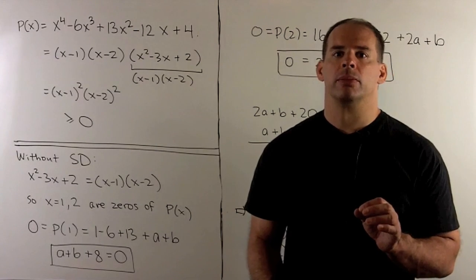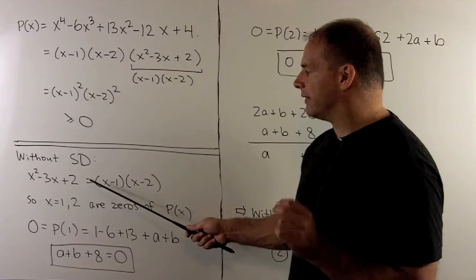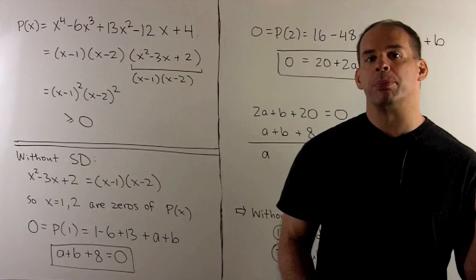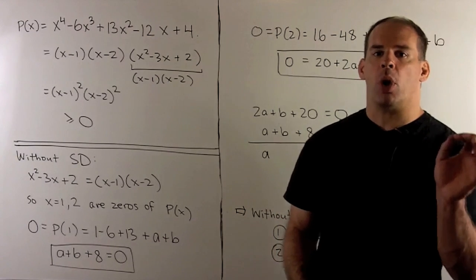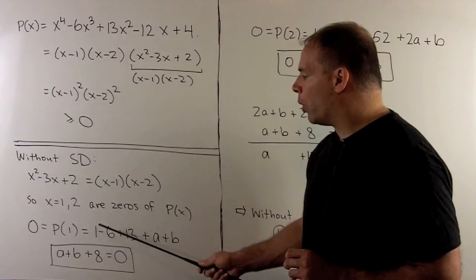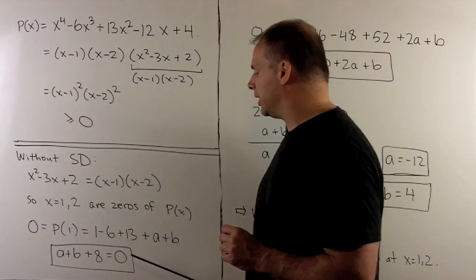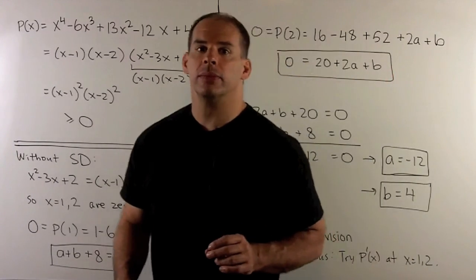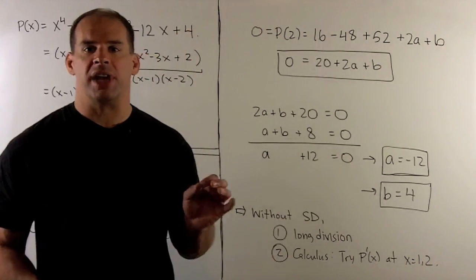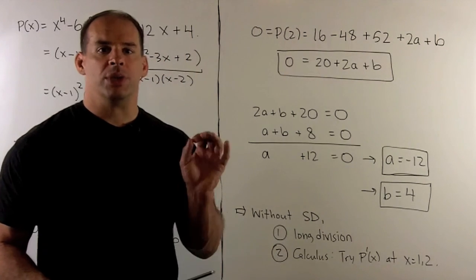Now for a third approach, if we didn't have synthetic division, well, we know how to factor our quadratic that divides P of X. So we'll have that 1 and 2 are zeros of this quadratic, which in turn means they're zeros of P of X. Now if we put 1 or 2 into P of X, we expect to get 0 out. So let's see what happens. If we put a 1 in, we get 1 minus 6 plus 13 plus A plus B. Set that equal to 0. I get A plus B plus 8 equals 0. If we put 2 in, I'll have 16 minus 48 plus 52 plus 2A plus B. We set that equal to 0. When I simplify, I get 0 equals 20 plus 2A plus B.